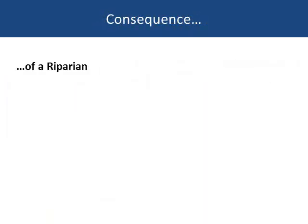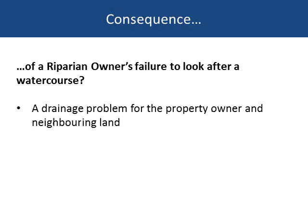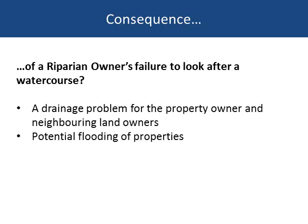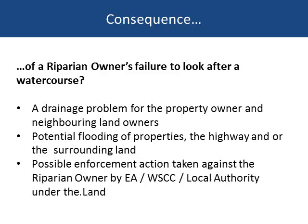What are the consequences of a riparian owner's failure to look after a watercourse? A drainage problem for the property owner and neighbouring landowners; potential flooding of properties, the highway and/or the surrounding land; and possible enforcement action taken against the riparian owner by the Environment Agency, West Sussex County Council or local authority under the Land Drainage Act 1991.